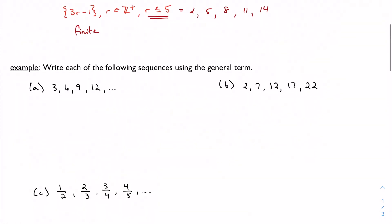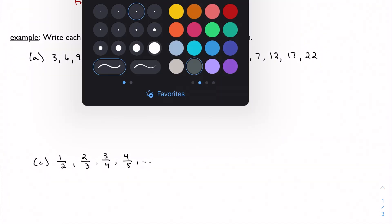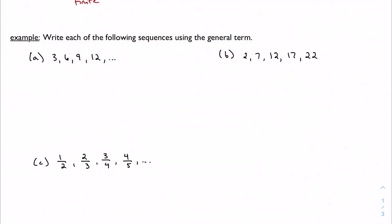So for example, write each of the following sequences using the general term. We have to work backwards here. And the way I like to do this, especially while we haven't really learned any shortcuts yet, is to make a table. So when r is 1 in this case we've got 3 and when r is 2, 6, 3, 9, 4, 12. And we kind of want to reverse engineer a function that allows us to produce 3, 6, 9, and 12 from 1, 2, 3, and 4. And this one's pretty straightforward.